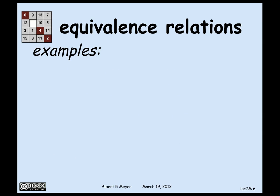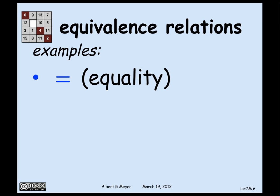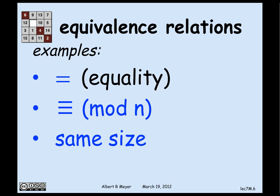Some examples of equivalence relations: the most fundamental one is equality, which is obviously symmetric, reflexive, and transitive. Another is congruence mod n, which you can also verify is symmetric, transitive, and reflexive. Additional examples include two sets being the same size (for finite sets), and two objects having the same color — having the same color is a relation among colored objects that is symmetric, transitive, and reflexive, so it's an equivalence relation.